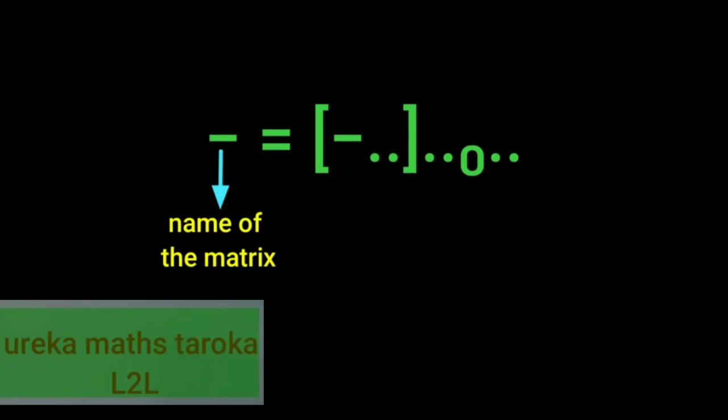The first part is the name of the matrix, or the capital letter. The first part is equal sign, next.